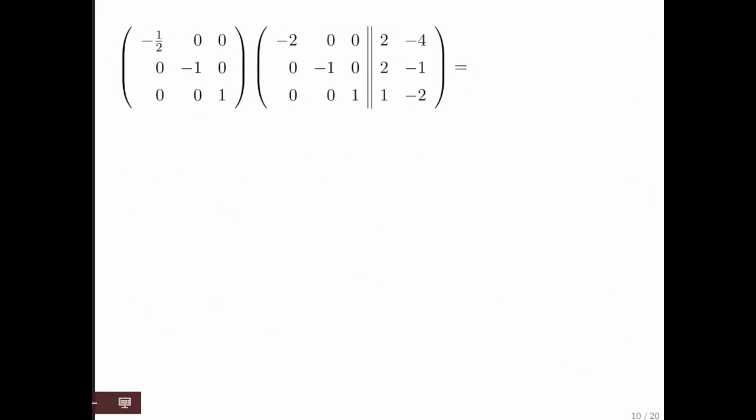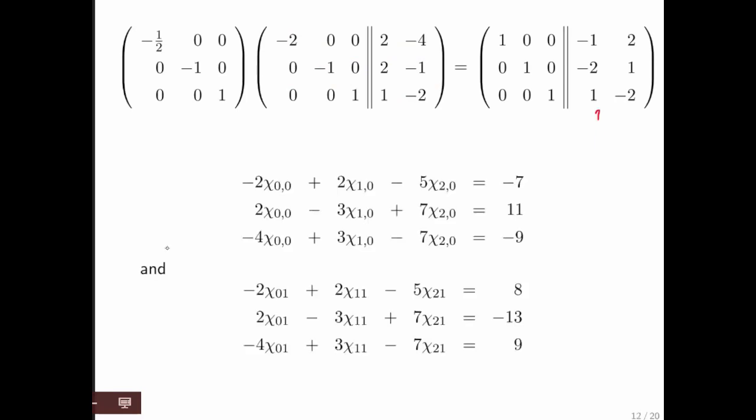And then we want to multiply by the inverse of the diagonal matrix that's sitting right here, in order to multiply rows to put ones on the diagonal. And this is what we get. And lo and behold, these are the solutions to these two systems with which we started.